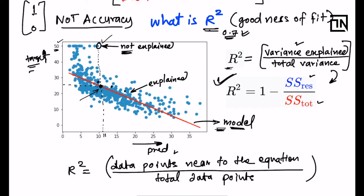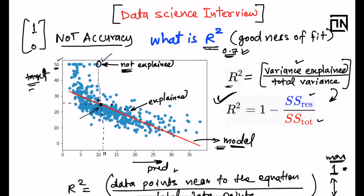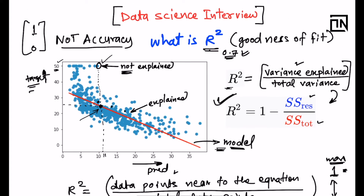If all points are closer to the line, this ratio goes higher. At maximum, if all points are exactly on the line, R squared becomes 1. If the line is very far away from all points, the ratio becomes 0 at minimum. So R squared varies between 0 and 1 and measures the effective fit of the model on training data.